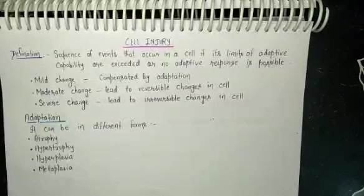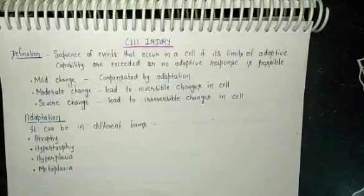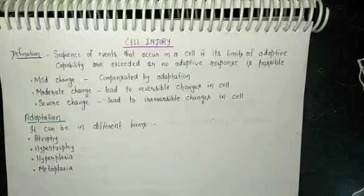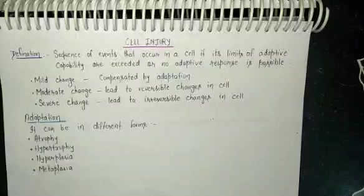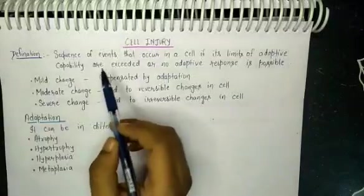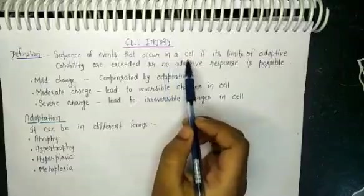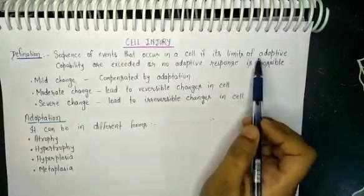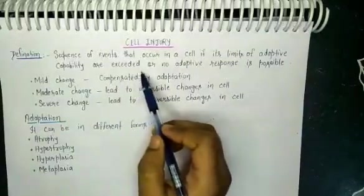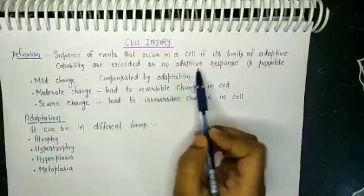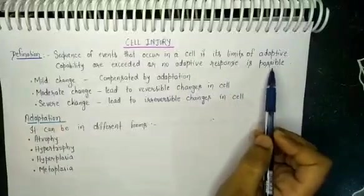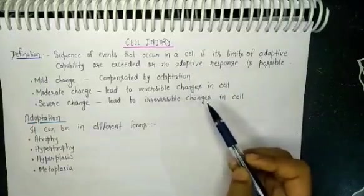Hello everyone, welcome to my YouTube channel Medico Voice. Today I am going to start General Pathology — the topic is cell injury. Cell injury is a sequence of events that occur in a cell if its limit of adaptive capability are exceeded or no adaptive response is possible.